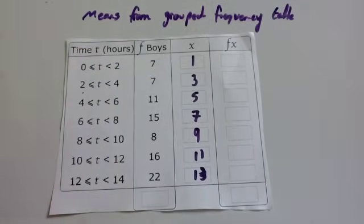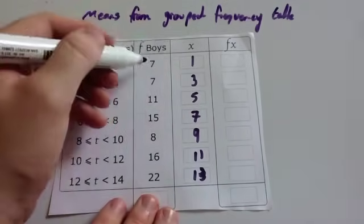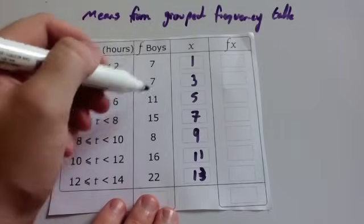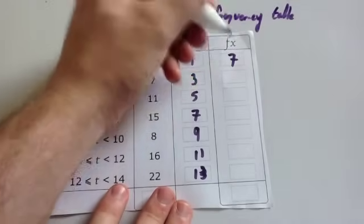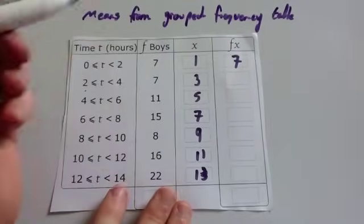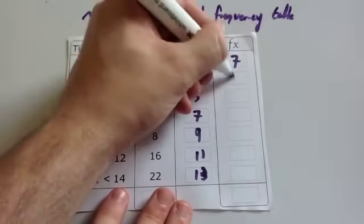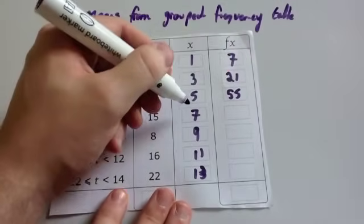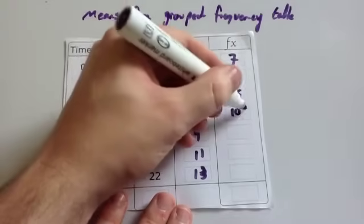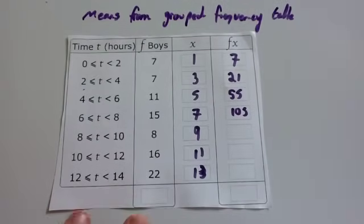Then we're going to multiply the frequency by the midpoint. So we're going to do 7 times 1, 7 times 3, 11 times 5, and so on. 7 times 1 is 7. So that's our fx. 7 times 3 is 21. 11 times 5 is 55. 15 times 7 is 105. You can check that on the calculator if you wish.